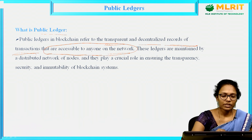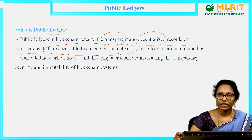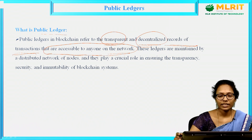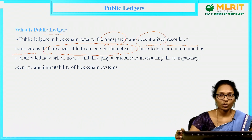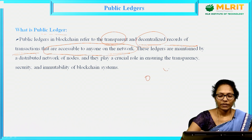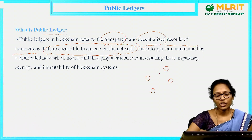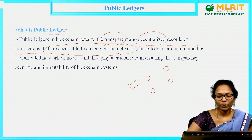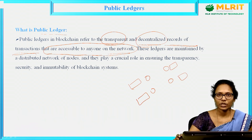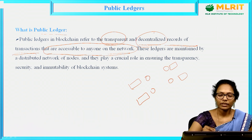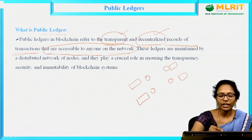We know the blockchain features — these are all transparent and decentralized. Transparent in the sense anyone can see the content, and decentralized in the sense there is no central authority to monitor this. It is also distributed, meaning if you have four nodes in the network, each node will maintain a copy of the ledger. So by default, following blockchain technology, it will be decentralized, distributed and transparent.